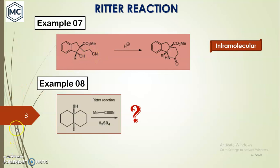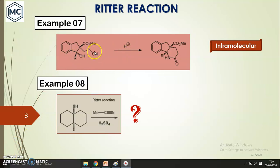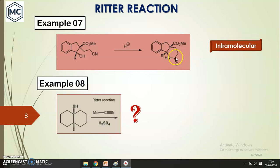Next is an intramolecular Ritter reaction, where the OH and C≡N groups are in the same compound. The hydroxy group is first protonated and a carbocation is formed. Then the nitrile group in the same compound reacts intramolecularly with this carbocation.